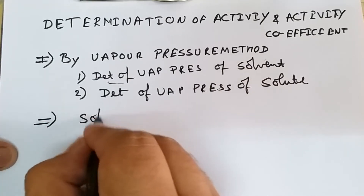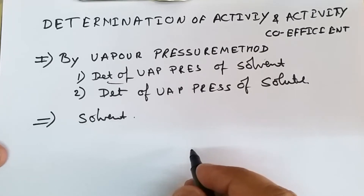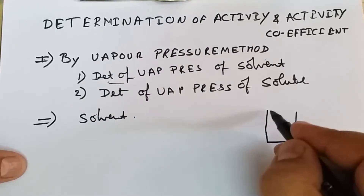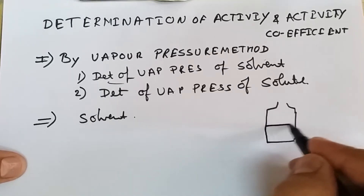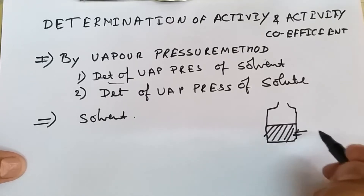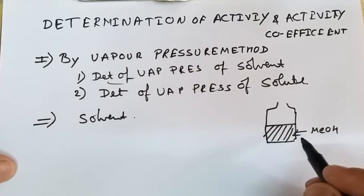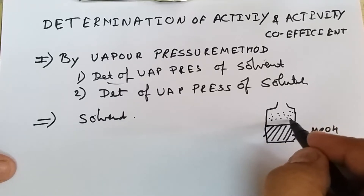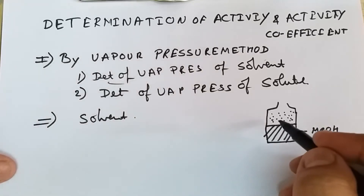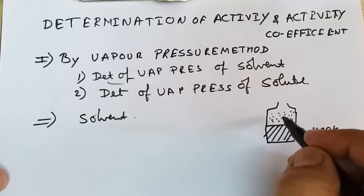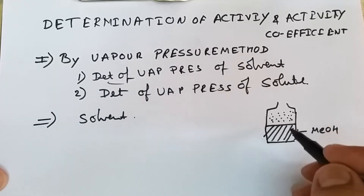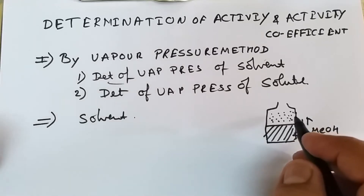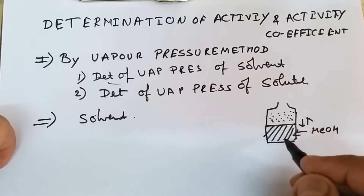To determine the vapor pressure of solvent, we consider a simple system — a bottle containing 50 ml of methanol. Methanol is a volatile solvent. If this bottle is kept to attain equilibrium, after some period of time some methanol will evaporate and cover the empty space in the bottle. After a certain period of time there will be an equilibrium between the liquid and the vapors present in the bottle.